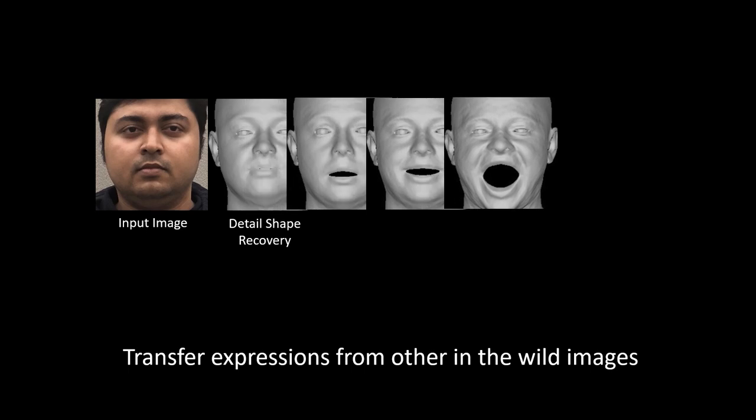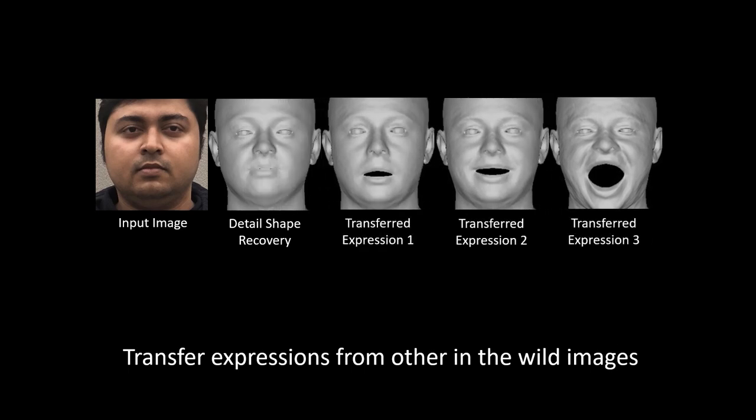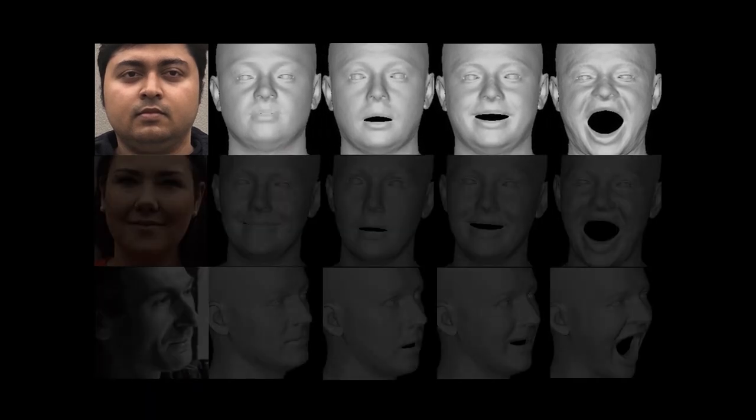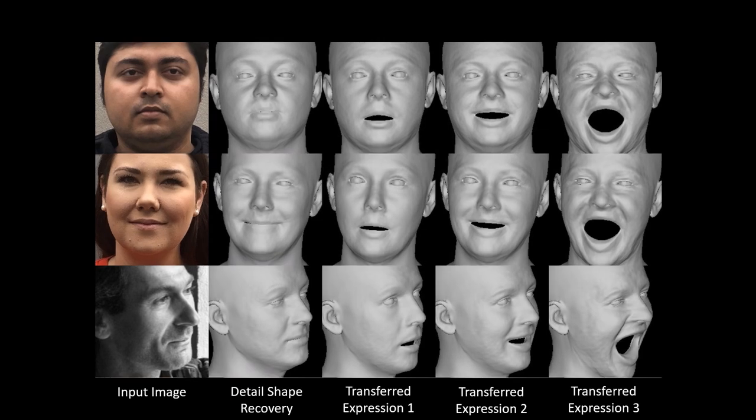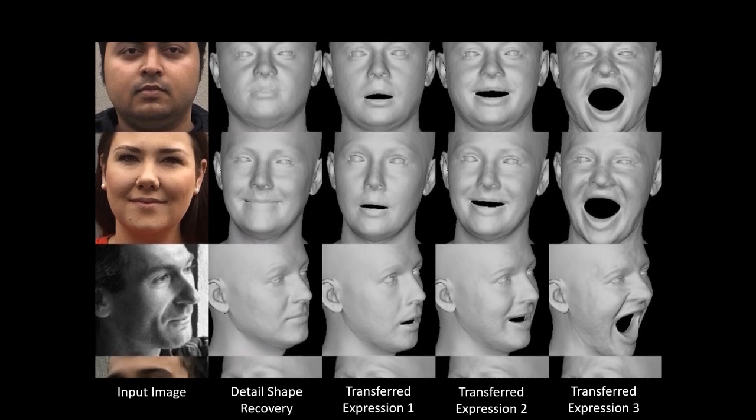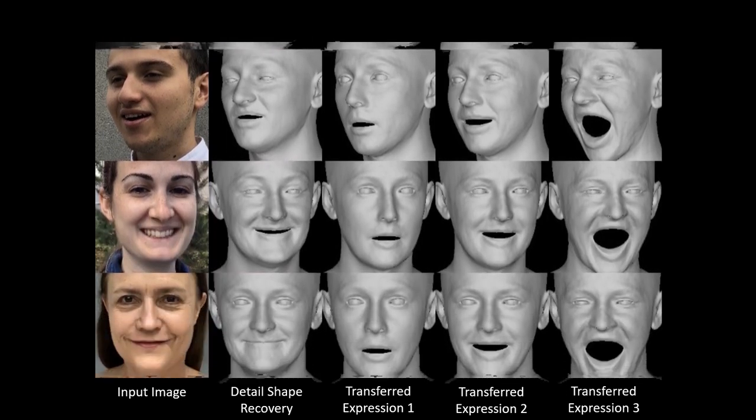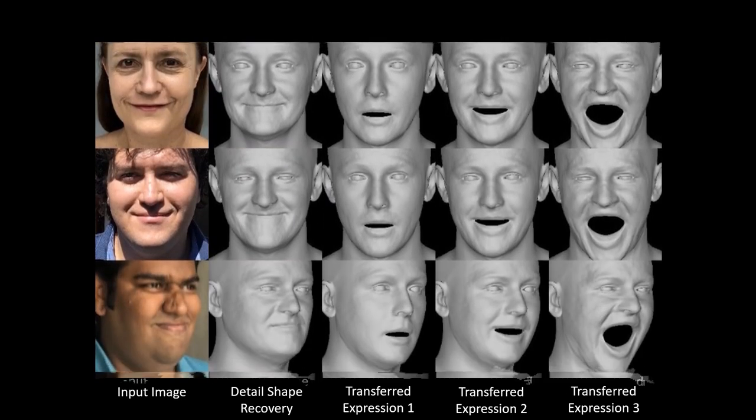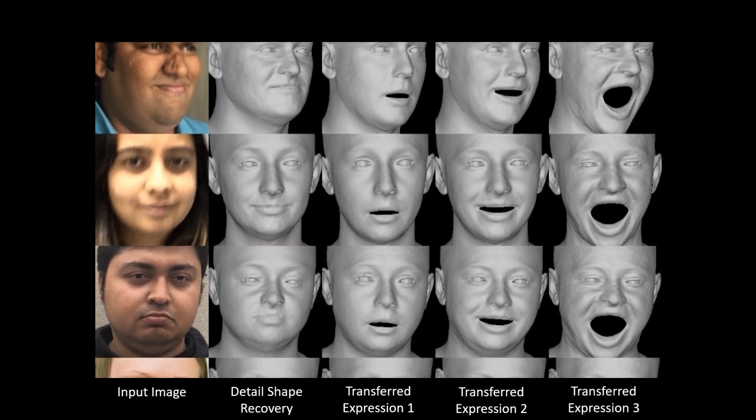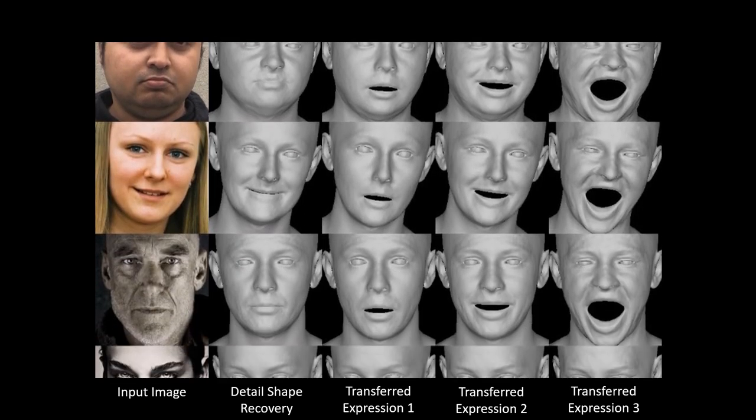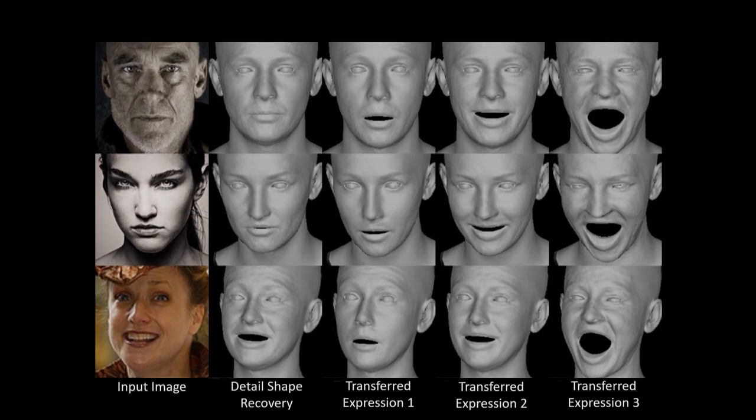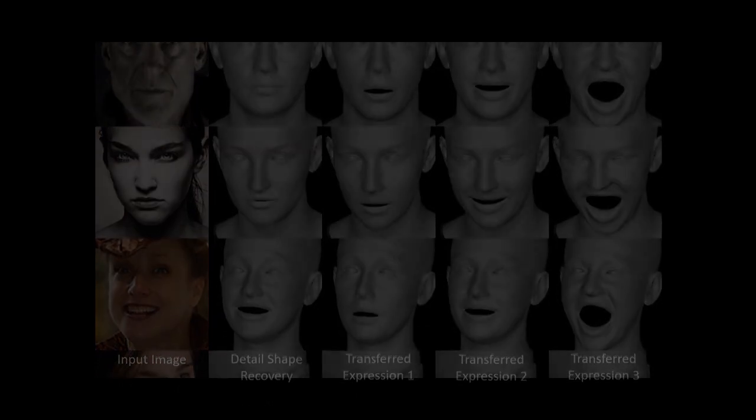Previous methods are able to extract wrinkle details but do not provide a model that can be animated such that the details vary with expression. Here we learn 3D shape and detail from a large corpus of in-the-wild face images. Learning from in-the-wild images provides robustness, but also enables us to formulate a novel loss that makes learning expression-conditioned details possible.